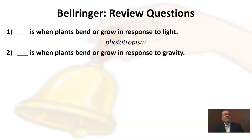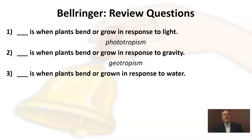Our second one is: blank is when plants bend or grow in response to gravity. What tropism is that? Of course, I'm talking about geotropism. Geo means earth, and sometimes this is called gravitropism, but more commonly it is called geotropism.